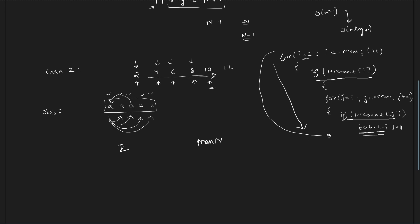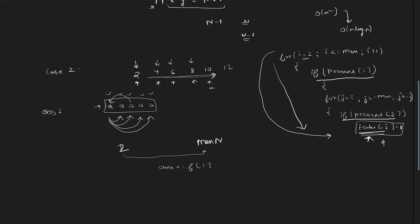At the end, I run a loop from 2 to max. Whichever elements have frequency greater than 1, I add their full frequency to the answer. For the rest of the elements with frequency exactly equal to 1, I check whether take[i] is marked, meaning it has a divisor in the array, and if so, I increment the answer.